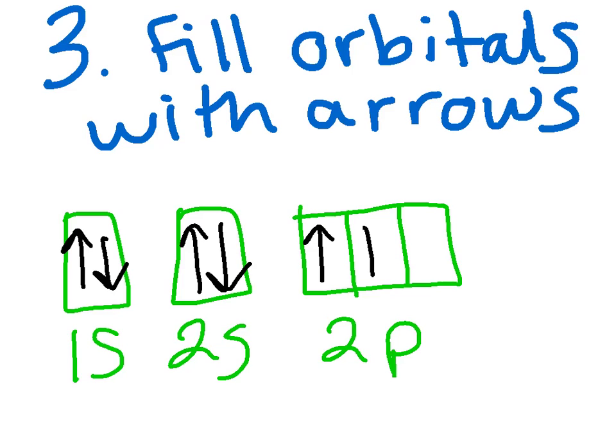This time it's going to be different. We're going to go arrow up, arrow up, arrow up, because one of the rules is that each electron needs to be in its own orbital first. Then I'm going to go back and start filling them in.